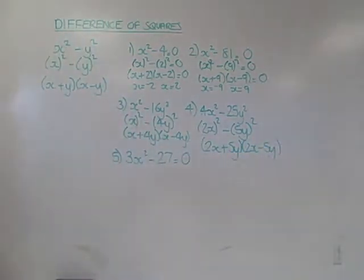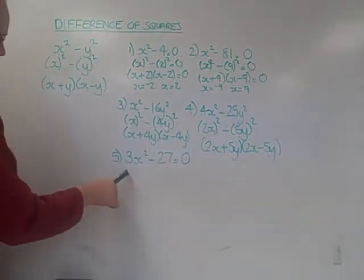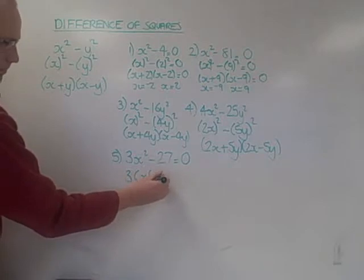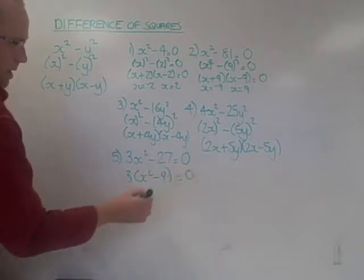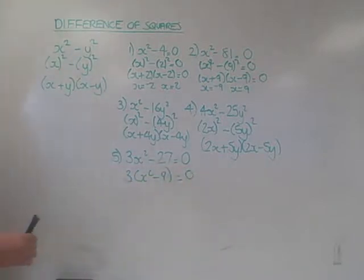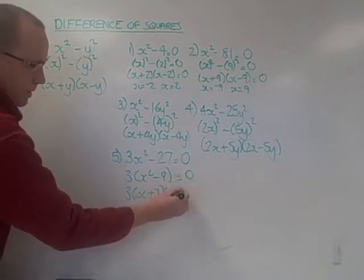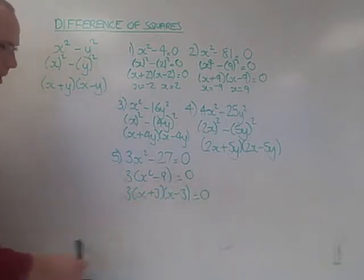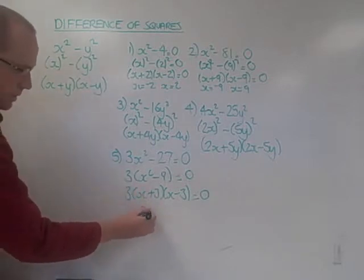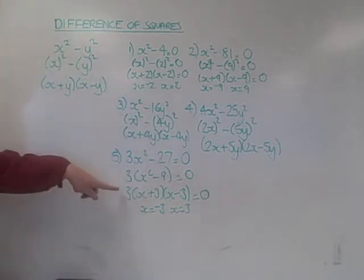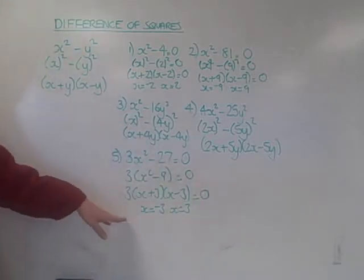Last question: this one's not a perfect square and neither is this one, but notice that both of these have a common factor of 3. And now this does work because 9 is 3². So I can say this is 3(x + 3)(x - 3). To find my two values equal to 0, I just do the opposites here: -3 and +3. Of course, 3 never equals 0, so that's not one of the solutions.